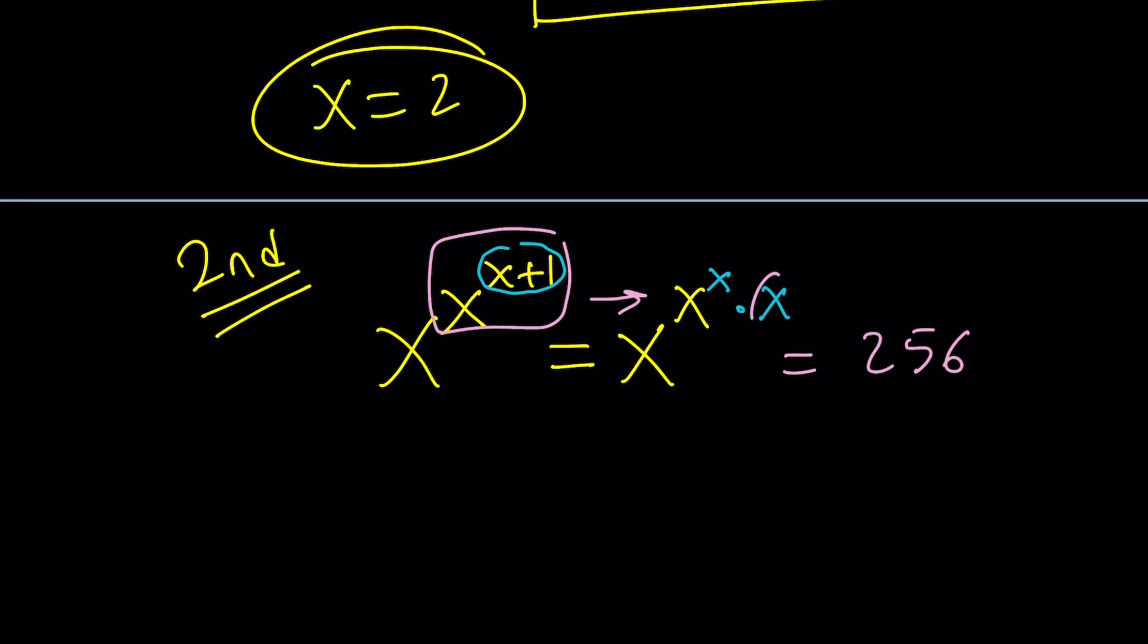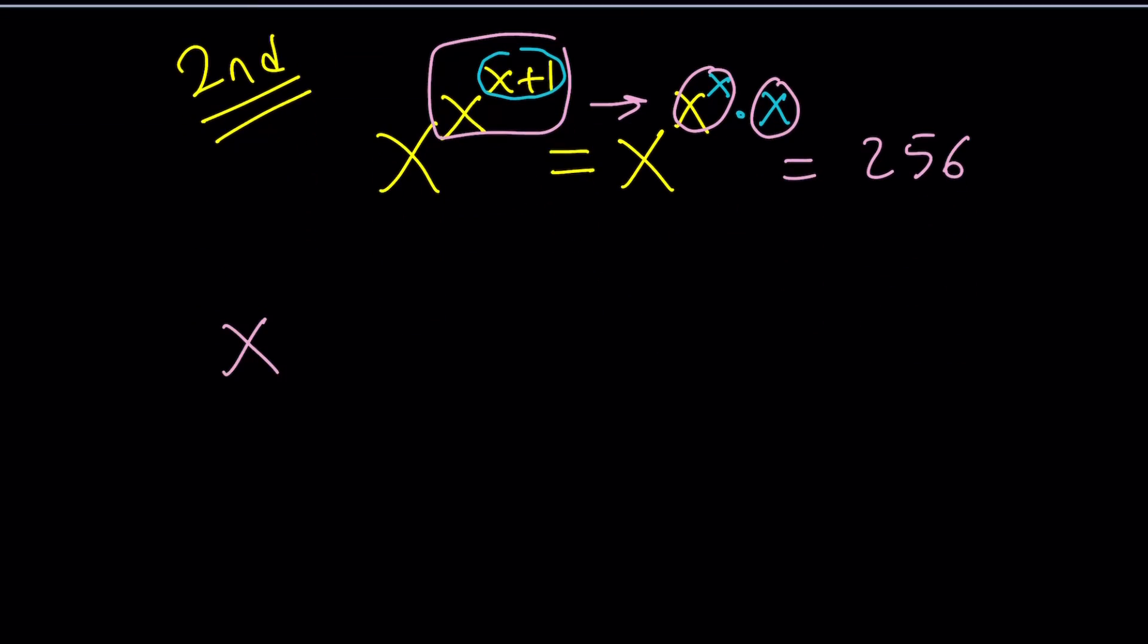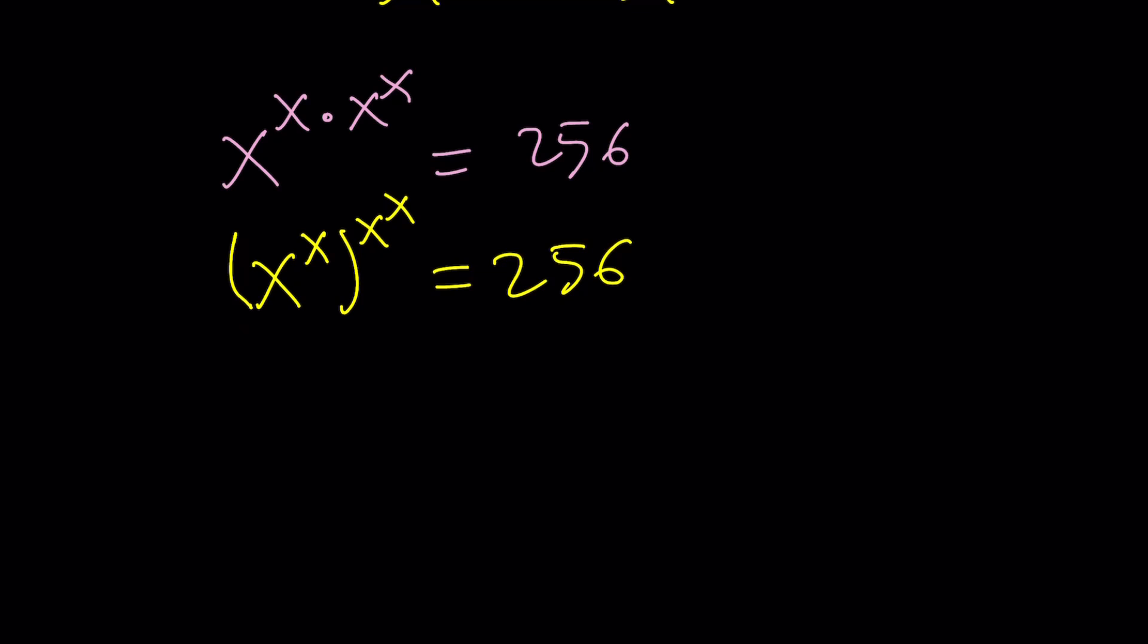Let's do more work. Notice that this x and this x to the x are multiplied. So, we can switch them around. And now, this is the aha moment. Notice that we can kind of write this as x to the power x to the power x to the power x. Nice. Now, we can go ahead and write the 256 this time as 2 to the 8th, but also 2 to the 2nd to the 4th or 4 to the 4th. Very nice.